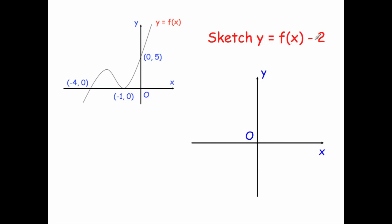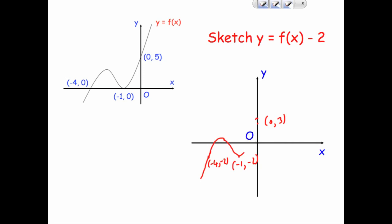Next, y equals f of x minus 2 moves the graph two squares down. The point (0, 5) becomes (0, 3), (-1, 0) becomes (-1, -2), and (-4, 0) becomes (-4, -2). The graph keeps the same shape, just shifted down two squares. It comes up, turns at the new positions, and passes through (0, 3) steeply.